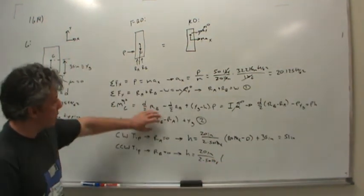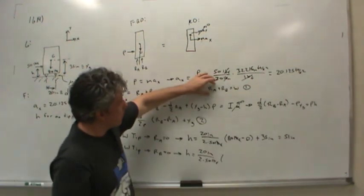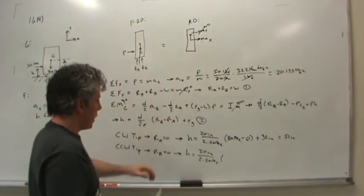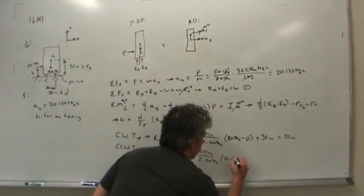And now let's see, if rb is zero, then this term is gone, but from the sum of forces equation, the weight must be equal to ra, or ra is equal to the weight. And so we'd have zero minus 80 pounds of force, again the pounds of force would go away,